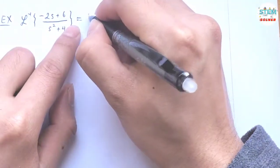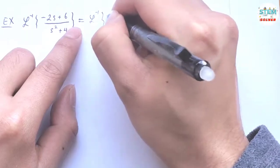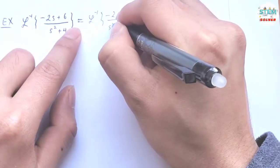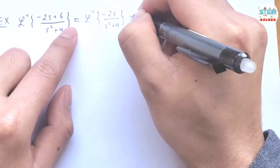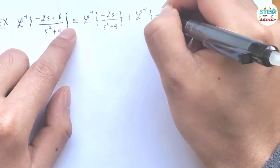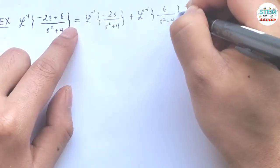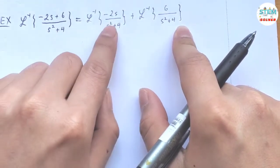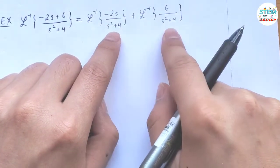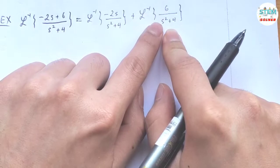So I'm going to have L inverse of negative 2x over x squared plus 4 plus L inverse of 6 over x squared plus 4. This is basically equivalent because you just break it out into 2 fractions, same denominator, you add the numerators together.